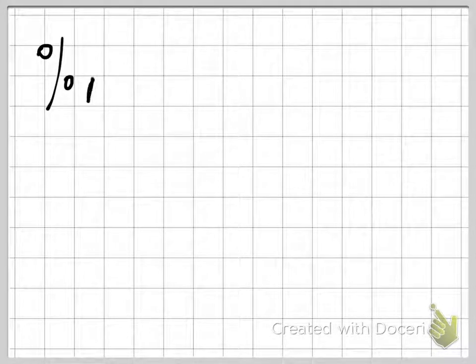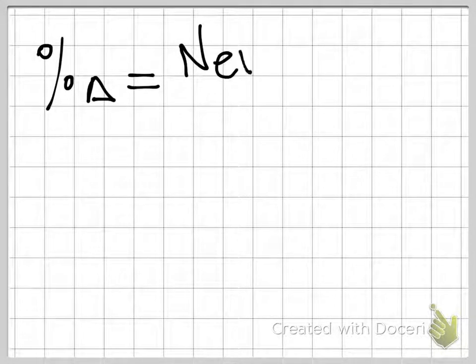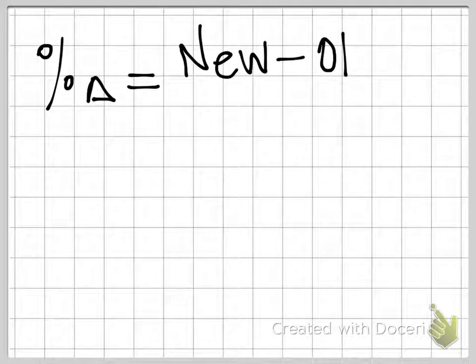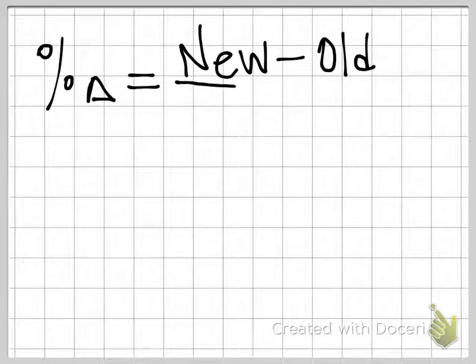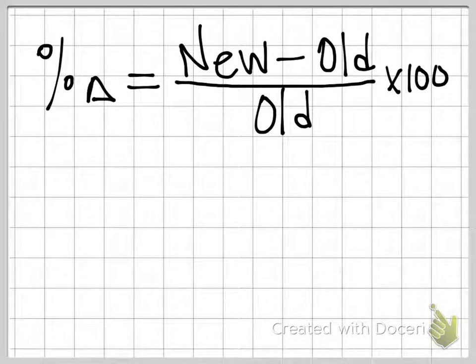So the formula that we're going to use here to calculate our percent change, it's super technical. I'm kidding, it's not. We're going to take our new index, so the most current year we're looking at, subtract from that the index in the previous year that we're comparing to. We're going to divide by the previous year, and then multiply by 100.